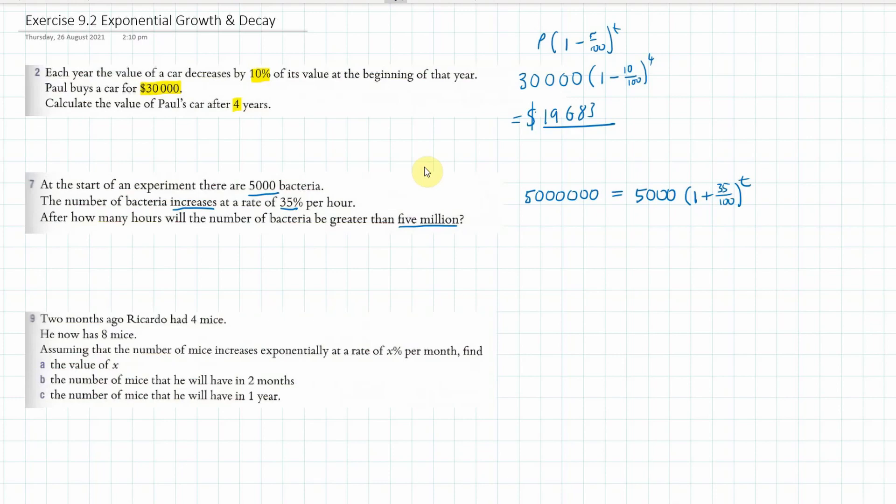And what we can then do is divide both sides by 5,000, so it'll be if we cross out those zeros, five million divided by five thousand is going to be one thousand.